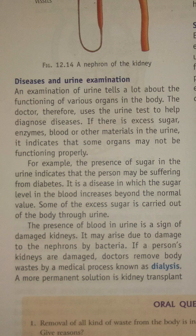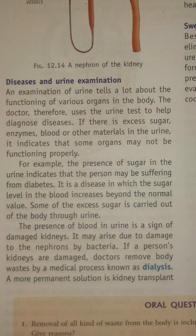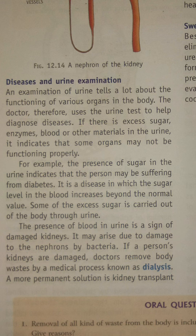For example, the presence of sugar in the urine indicates that the person may be suffering from diabetes. It is a disease in which the sugar level in the blood increases beyond the normal value. Some of the excess sugar is then carried out of the body through the urine.